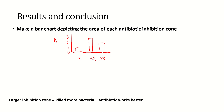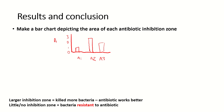If your inhibition zones are larger — for example, for antibiotic 2, we can see the area of the inhibition zone is a lot larger — this means that the antibiotic has been more successful in killing the bacteria, showing that the antibiotic works a lot better. However, if there is little or no inhibition zone at all, which could be the case, this means that the bacteria have become resistant to the antibiotic, so the antibiotic does not kill the bacteria.